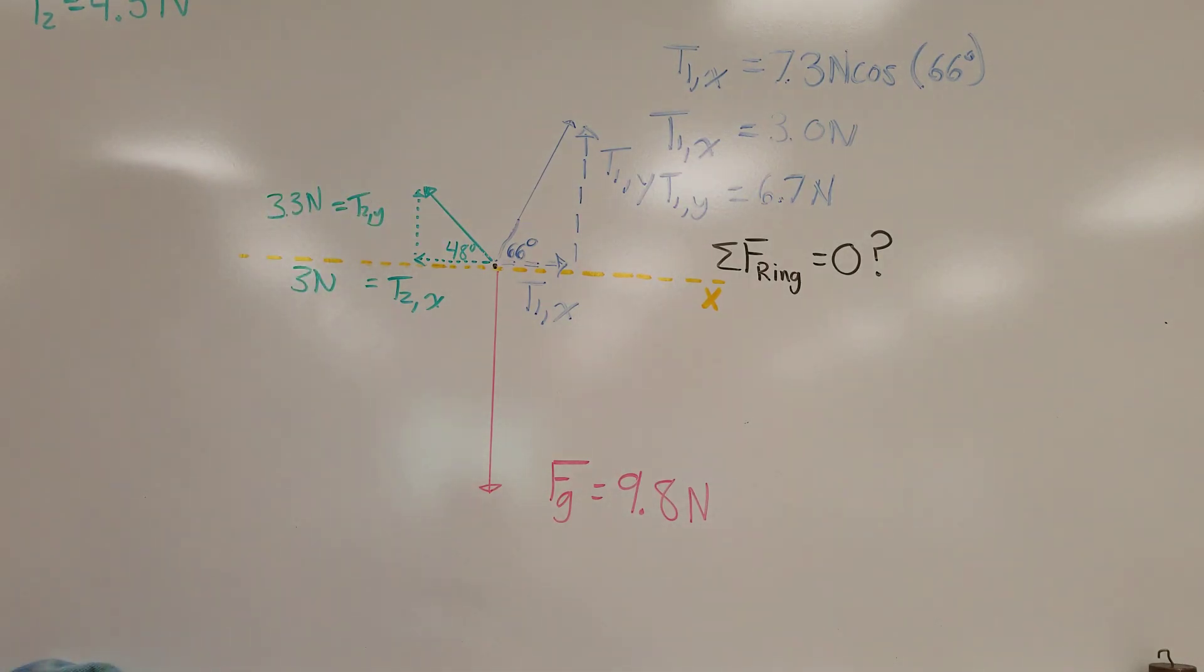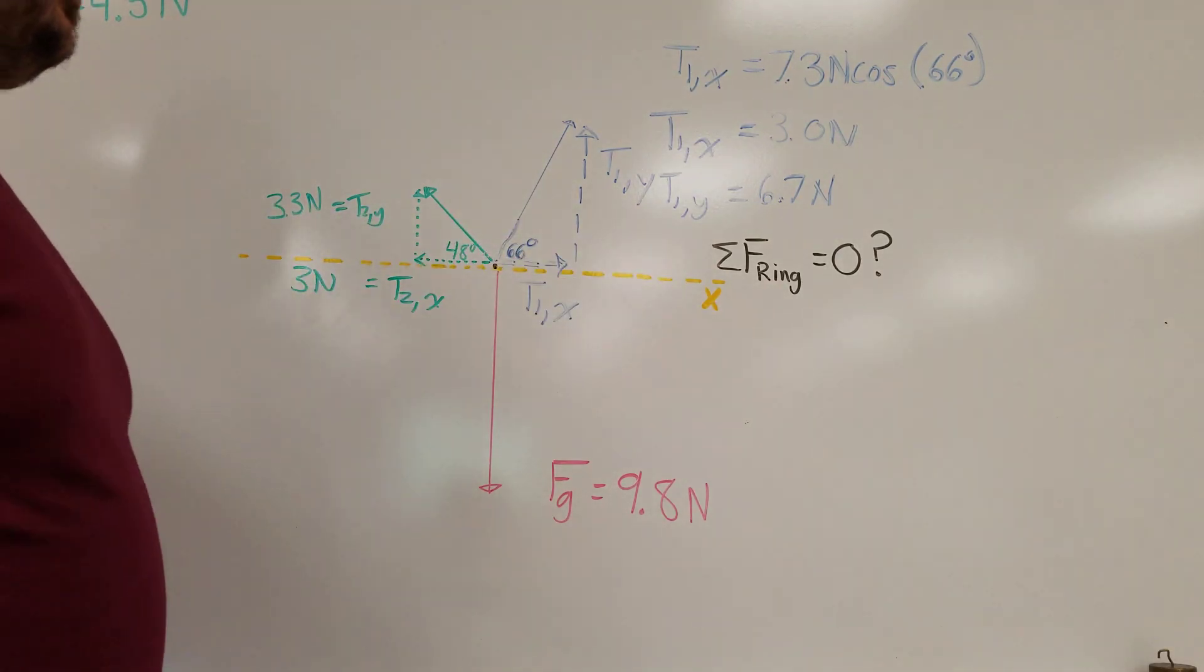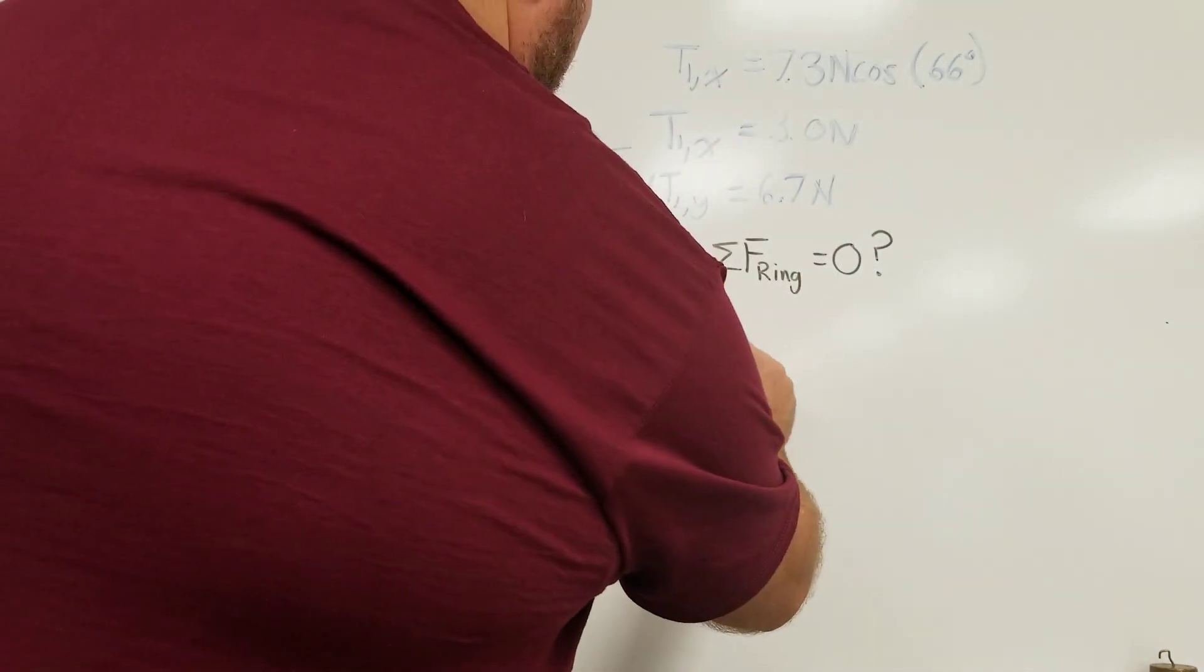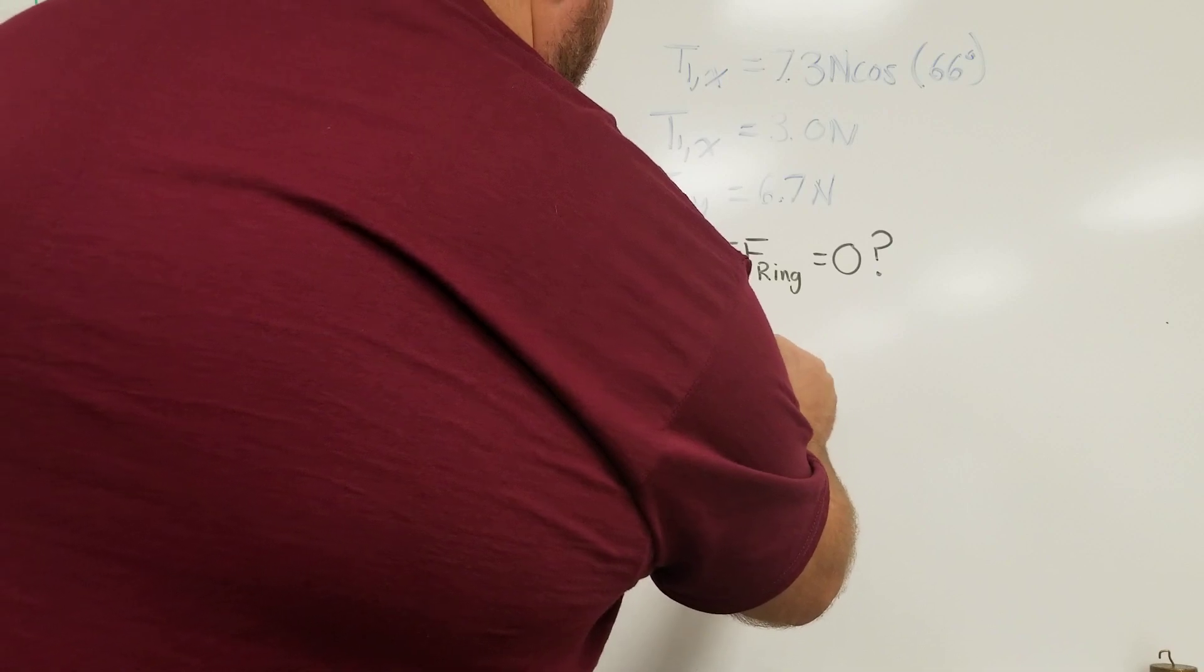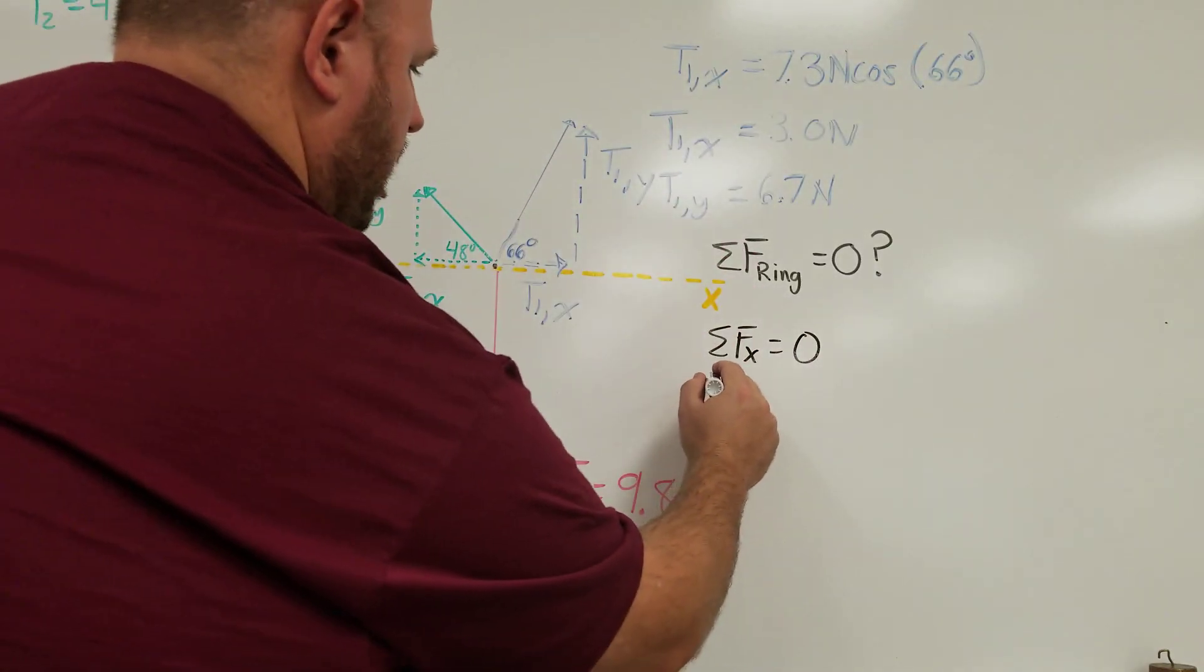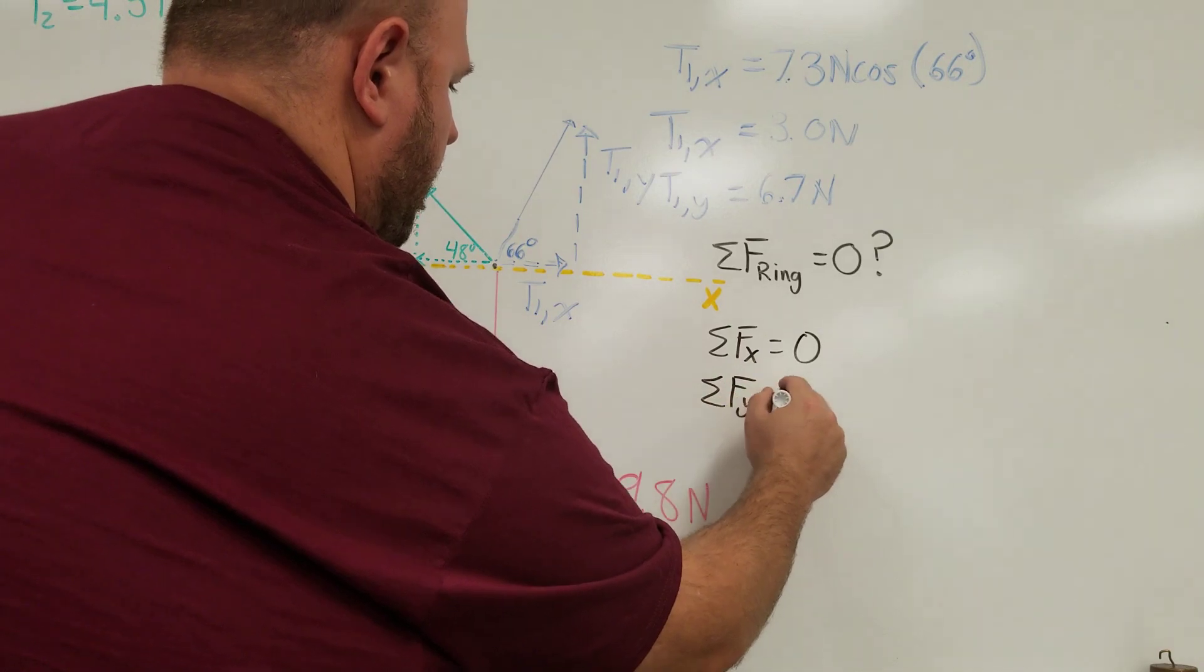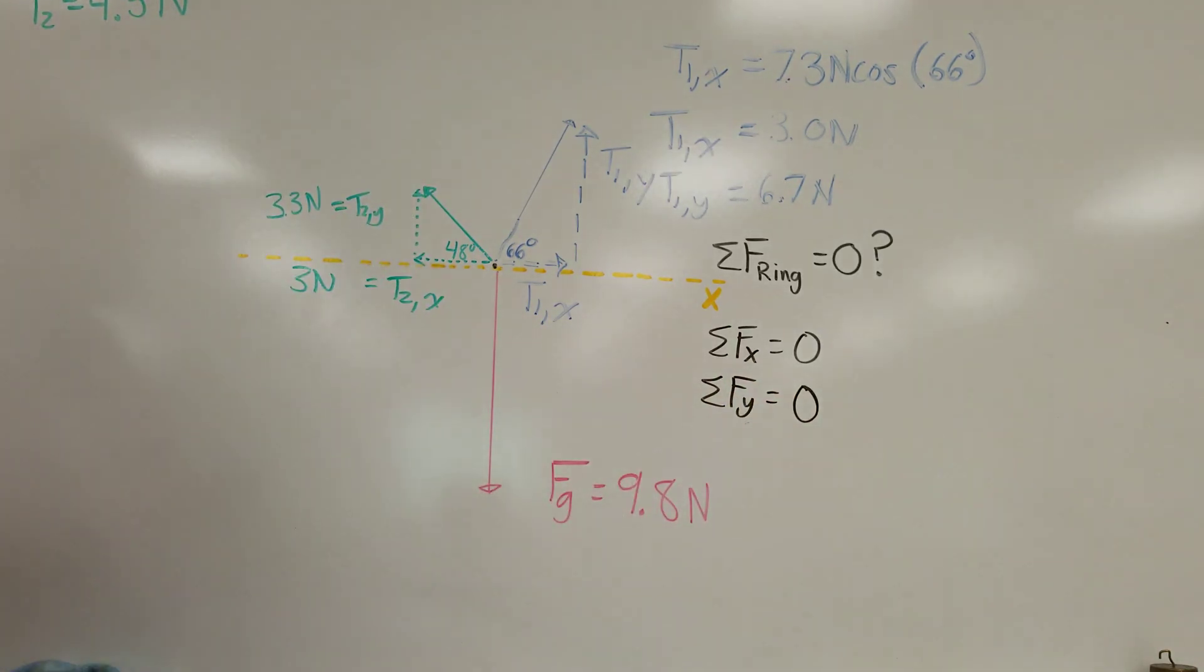Okay, so when I say that the net force on that ring has to be equal to zero, that means in both directions of motion, or any direction of motion really. So horizontally, in the X direction, the net force has to add up to zero. And in the Y direction, the net force has to add up to zero. So both of those have to be true in order for that ring to be in equilibrium.